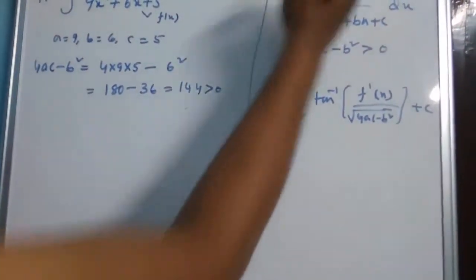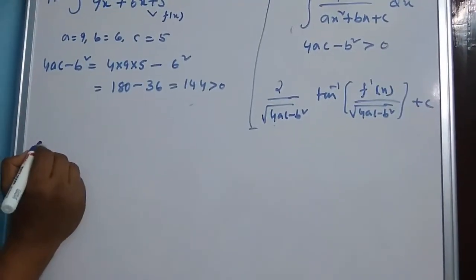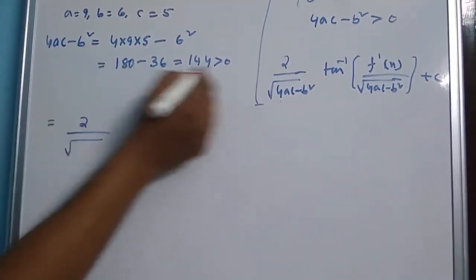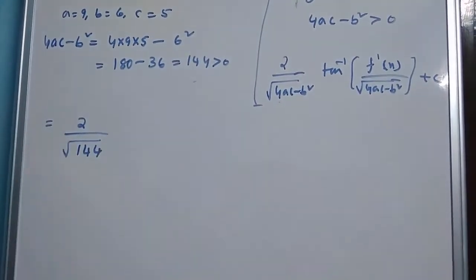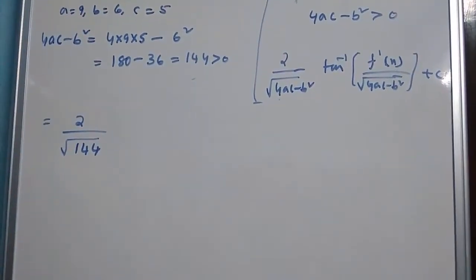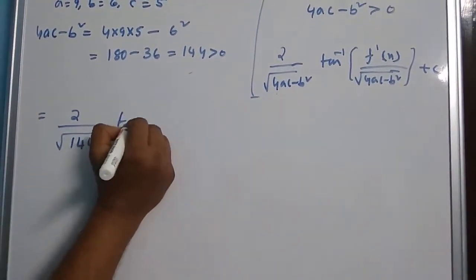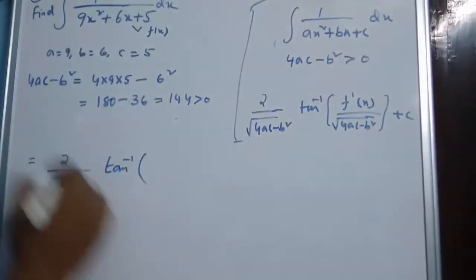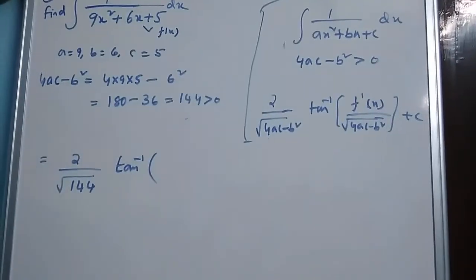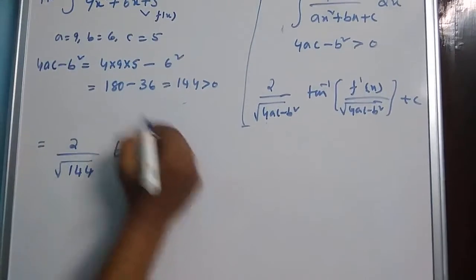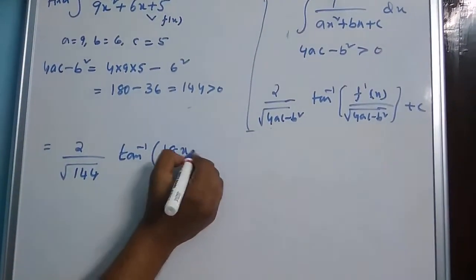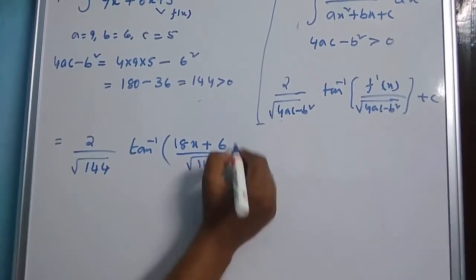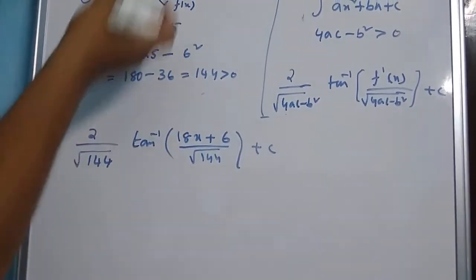So now we use that formula. The integral equals 2 over root of (4ac minus b squared); the value of 4ac minus b squared is 144, times tan inverse of f dash of x. First suppose the denominator is f(x), then find its derivative. f dash of x is the derivative: derivative of 9x squared is 18x, derivative of 6x is 6, over root of 144, plus constant c.